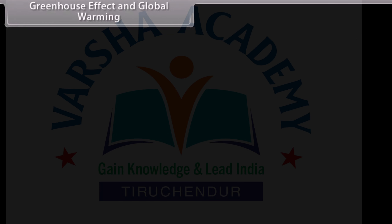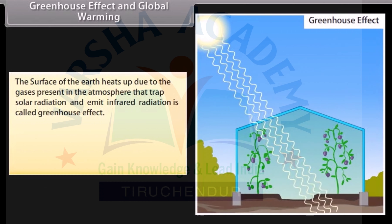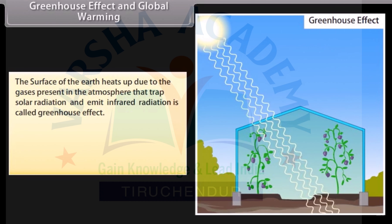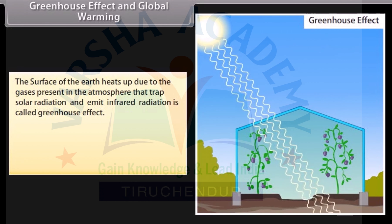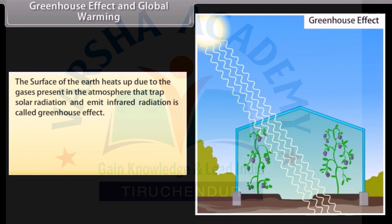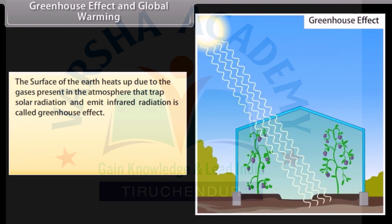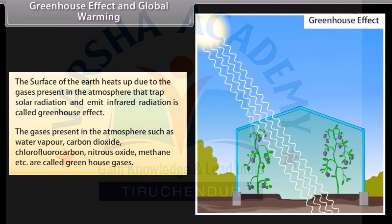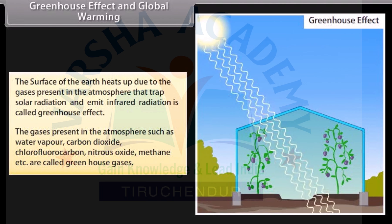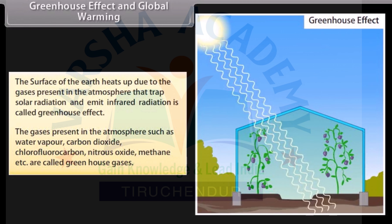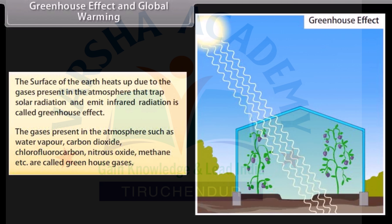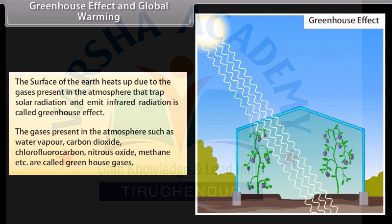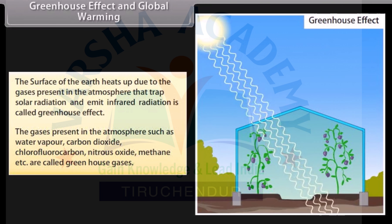Greenhouse Effect and Global Warming: The surface of the Earth heats up due to gases present in the atmosphere that trap solar radiation and emit infrared radiation — this is called the greenhouse effect. The gases present in the atmosphere such as water vapor, carbon dioxide, chlorofluorocarbons (CFCs), nitrous oxide, and methane are called greenhouse gases.